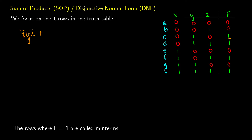Now for row d: not-x because x is false, y because y is true, and z. For row f: x is true, y is false so we put not-y, and z because z is true. Finally for row h: x is true, y is true, and z is true — so x, y, z.